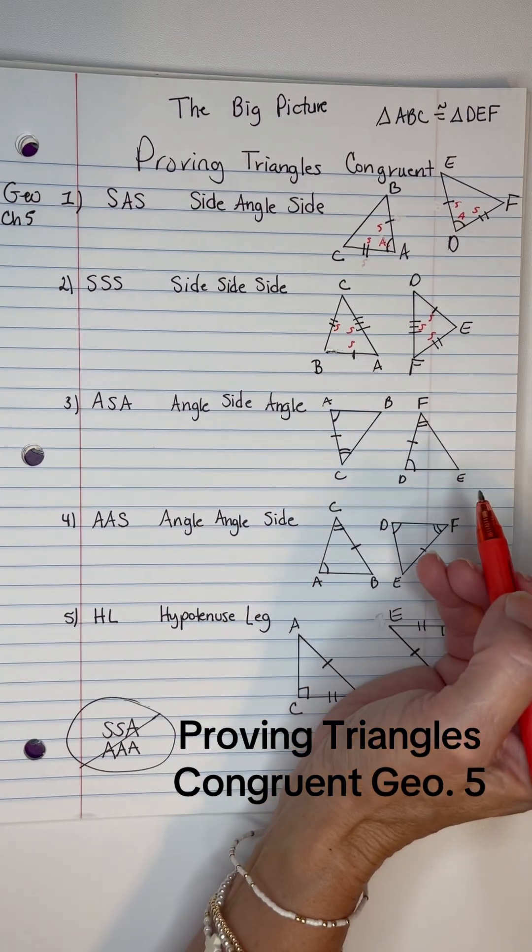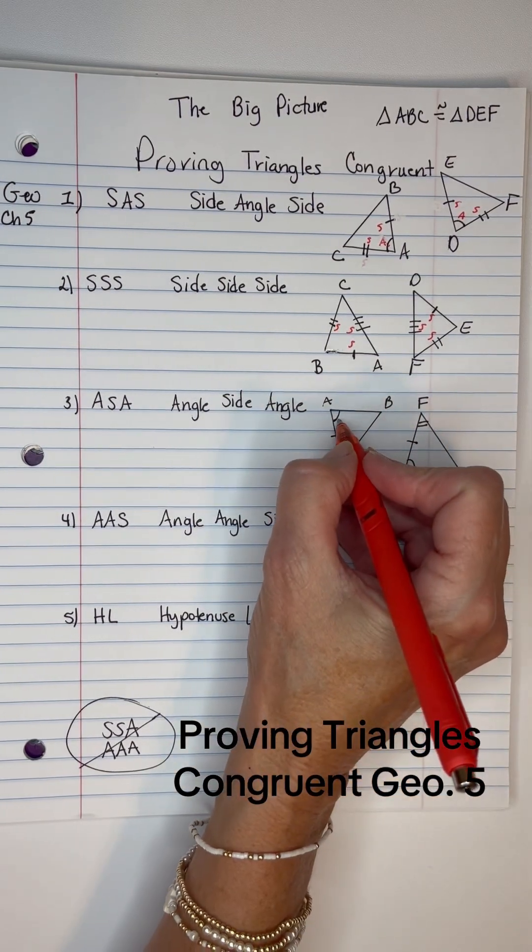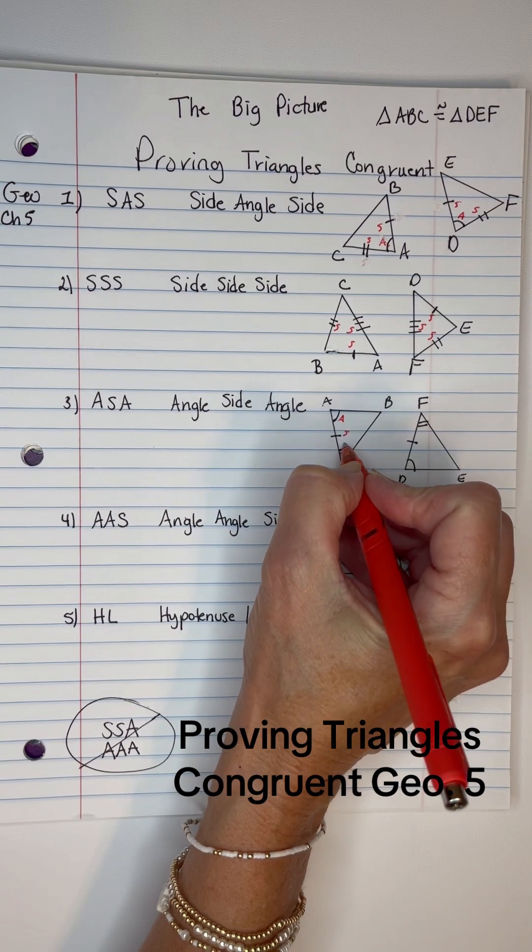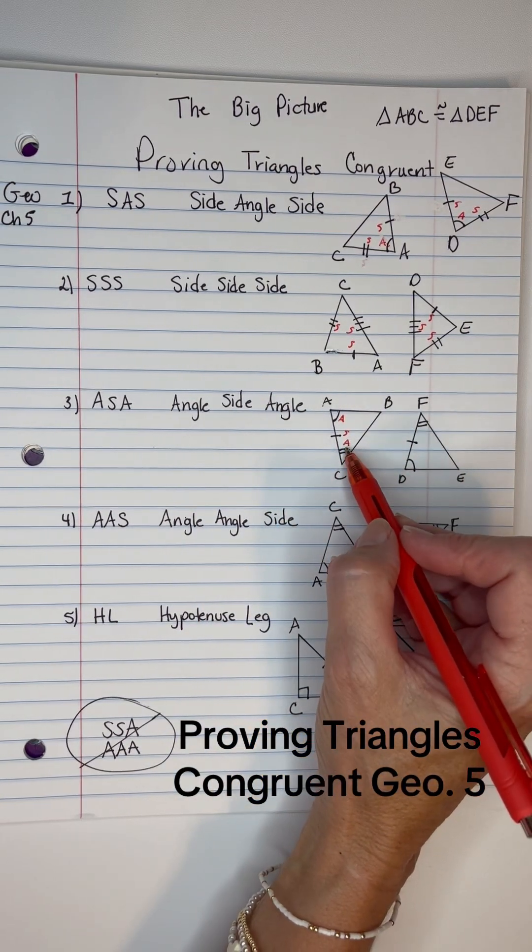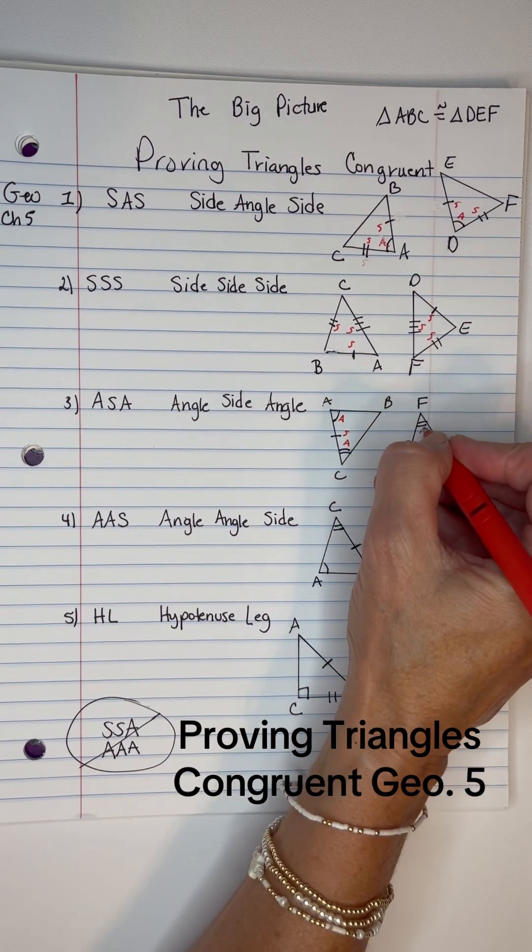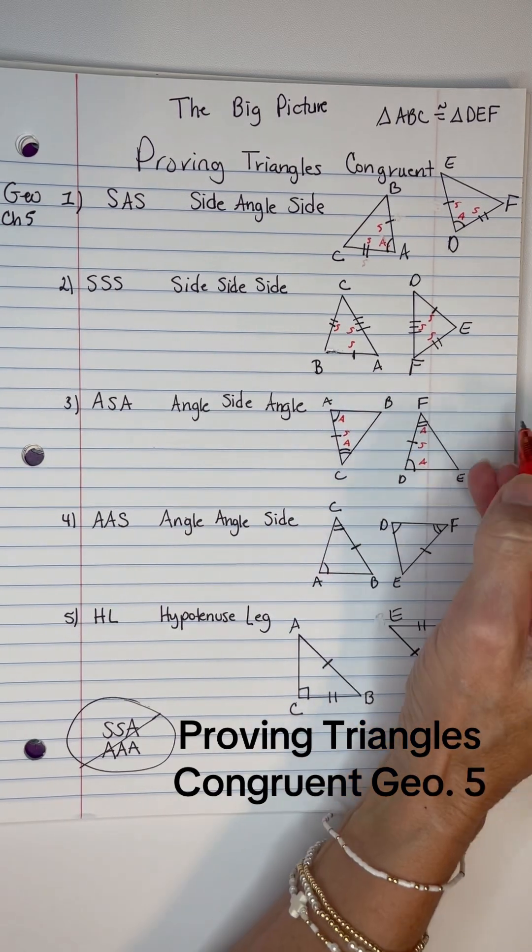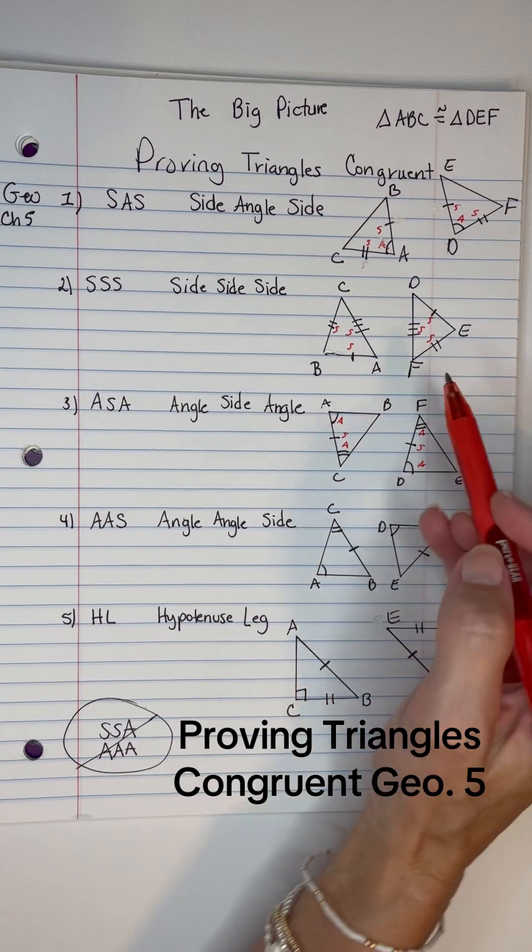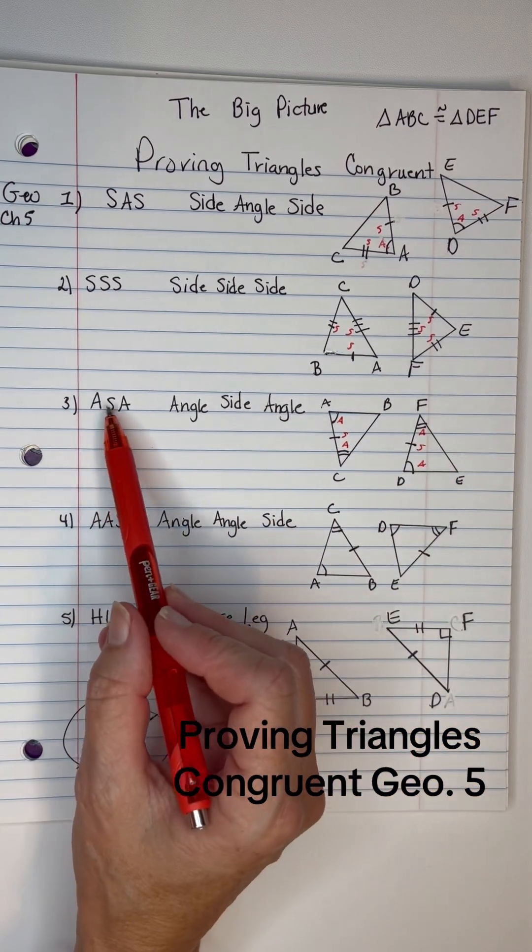Now, on this one right here, I have an angle mark, a side mark, and an angle. The side is between the two angles, so that's called the included side, and it's the same here. Angle, side, angle. So, when the side's between the angles, we can prove congruence with ASA.